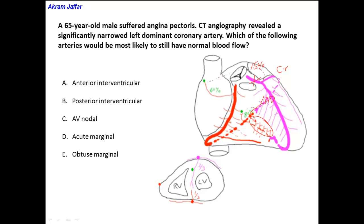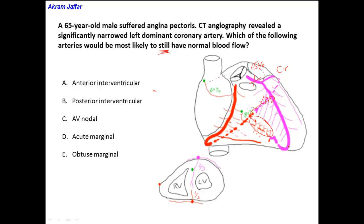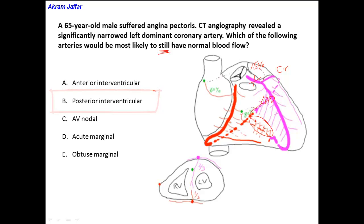Now let's evaluate the options. We are looking for which artery would most likely still have normal blood flow — meaning it will not be affected. Option A: the anterior interventricular artery — this is a branch of the left coronary artery whether it is dominant or non-dominant, so it must be affected. Option B: the posterior interventricular artery — in a dominant left coronary artery, it is a branch of the left coronary artery, so it will definitely be affected as well.